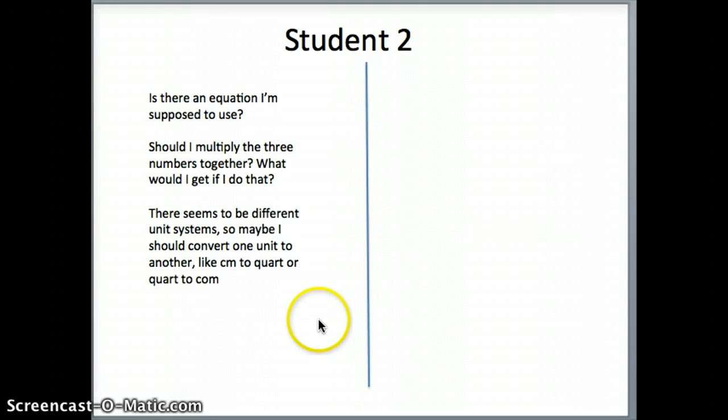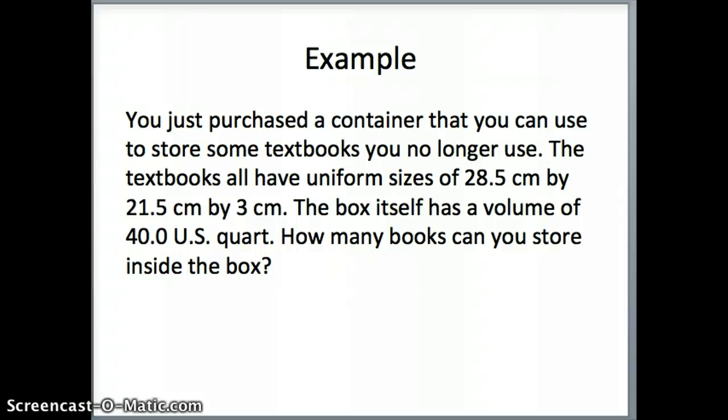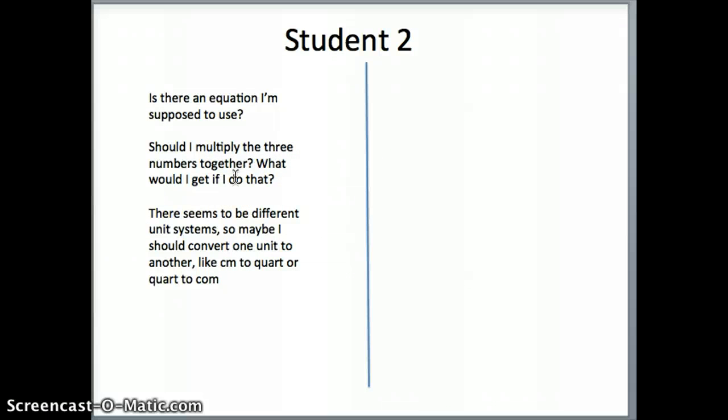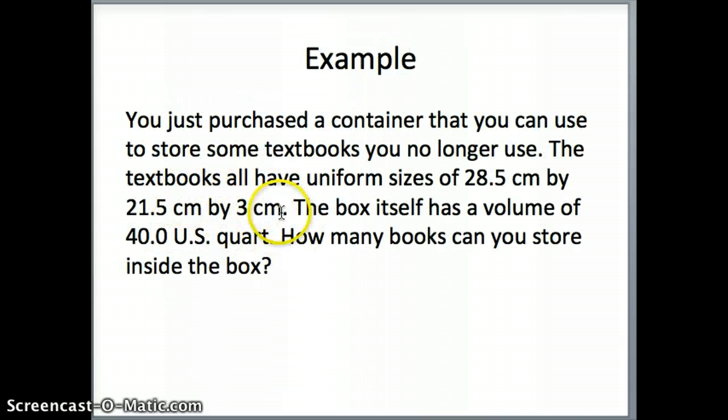Now, somebody on the second type, student number two, could be giving one of these answers right here, or one of these thought process right here. The person could be saying, is there some kind of equation I'm supposed to use with this problem? That's a very common approach. And that's not bad, because then you're starting to think about something that you might have learned that you might be able to use in this case. The second question might be, you look at this problem and you say, well, there's three numbers here. Am I supposed to multiply these numbers together? Am I supposed to add them together? But regardless of what you're thinking about, you're starting to think about something associated with using the numbers and getting you somewhere with it. And then if you look at the problem again, you can see that there are different unit systems. So maybe you have to take one unit and convert the other unit or vice versa. That's another thought there. So that's student number two.